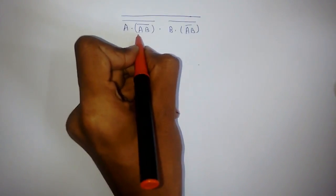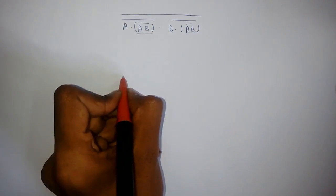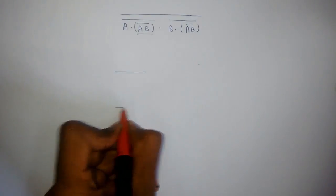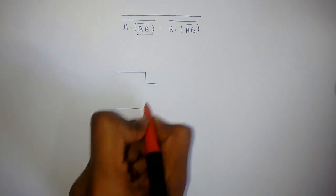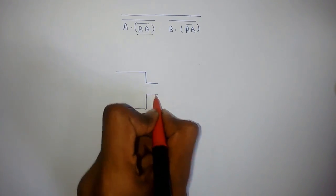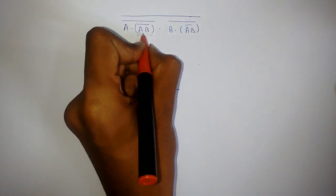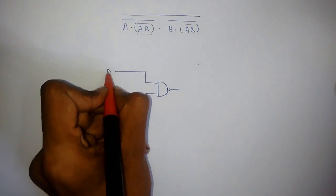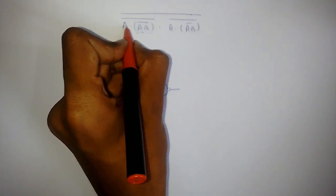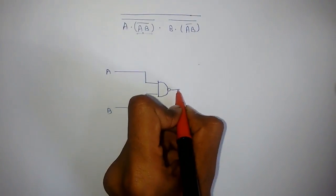Firstly we will generate this signal. So we will require A and B. So this signal is generated. Now this is A and this is B. Now we have to make NAND of A and this signal.